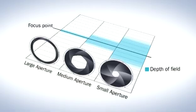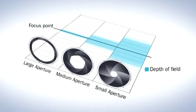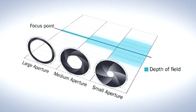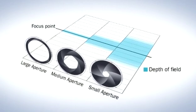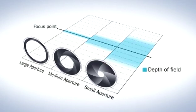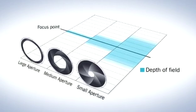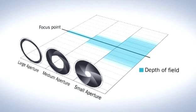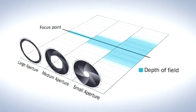The main factor that influences the depth of field is the lens aperture, the size of the opening on the lens that allows light to pass through to the camera sensor. The aperture normally varies with lighting conditions, and there's a corresponding variation in the depth of field.